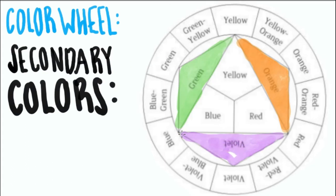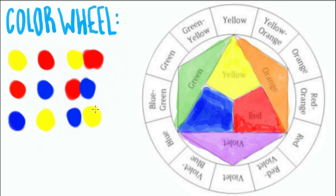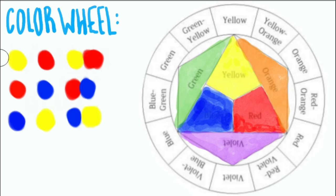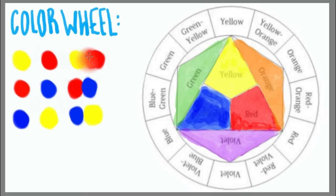The secondary colors are orange, green, and purple. These colors can be made by mixing two out of the three primary colors together. At the top I have red and yellow — I'll mix those two to make orange. Below that, red and blue make purple, and blue and yellow make green.